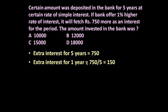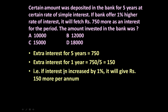Now, extra interest for 1 year will be equal to 750 divided by 5, which is equal to 150. It means if the interest rate is increased by 1%, he will receive Rs. 150 extra as interest every year — Rs. 150 more per annum.